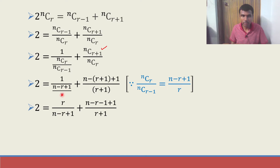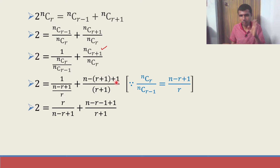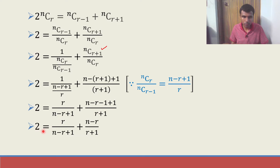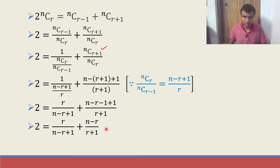After substitution and basic simplification, 2 = r/(n−r+1) + (n−r)/(r+1). Now take LCM and solve.